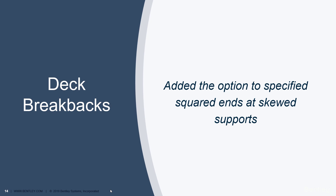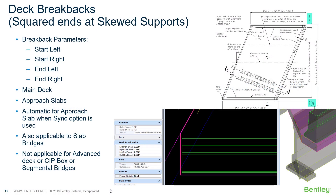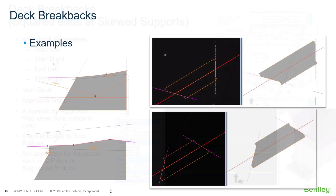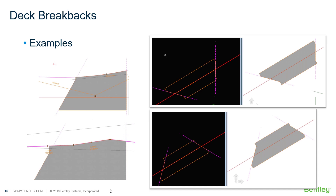We added the option to do deck breakbacks. These are the square ends at the end of the deck. When your bridge is in skew, to prevent the acute angle formed at the corners of the deck, you now have the option via a dialog box to specify the dimensions of the breakback. You can apply the dimensions to the left and right corners at the beginning or at the end of the deck.